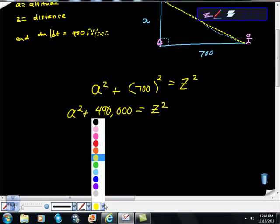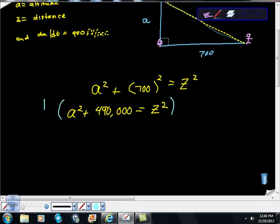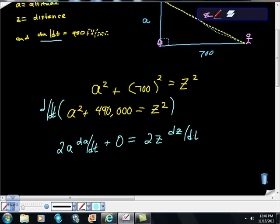Now I'm going to do the thing that we always do in related rates after we have our equation. Then we differentiate with respect to T. So I'm going to take d/dt of this whole mess. And d/dt of A squared is 2A dA/dt. And remember, they gave us dA/dt, so we're going to do something with that in a minute. Plus the first derivative of a constant is zero.